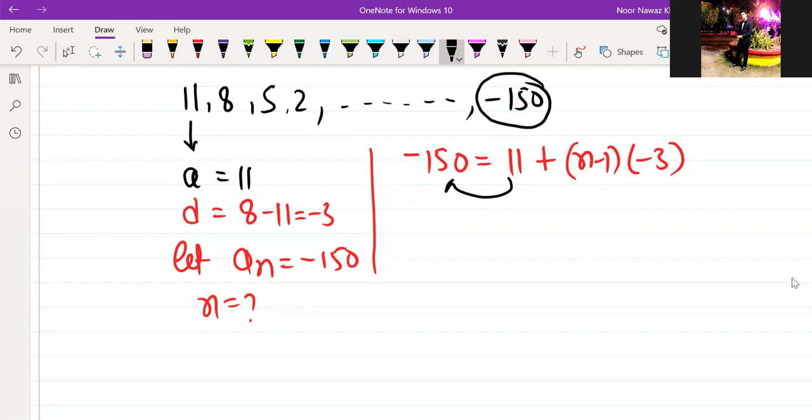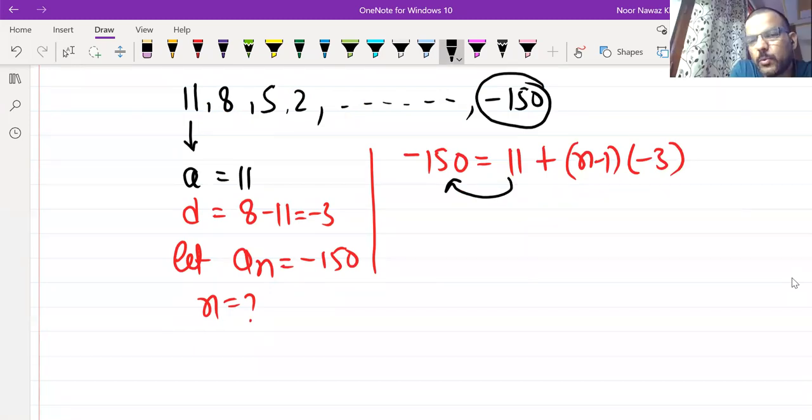Minus 150 minus 11, so that will be our minus 161. Divide, so that will be minus 3.